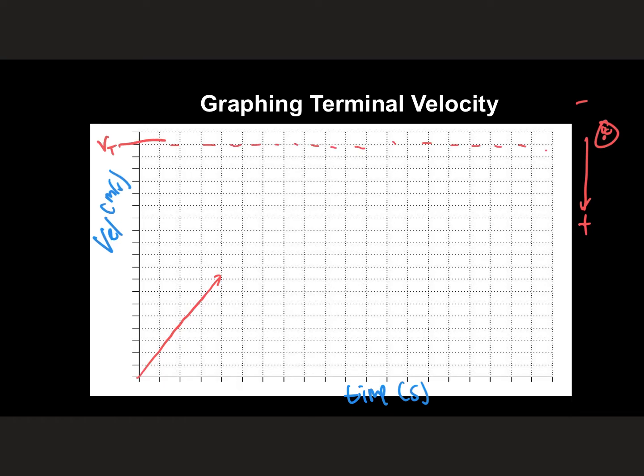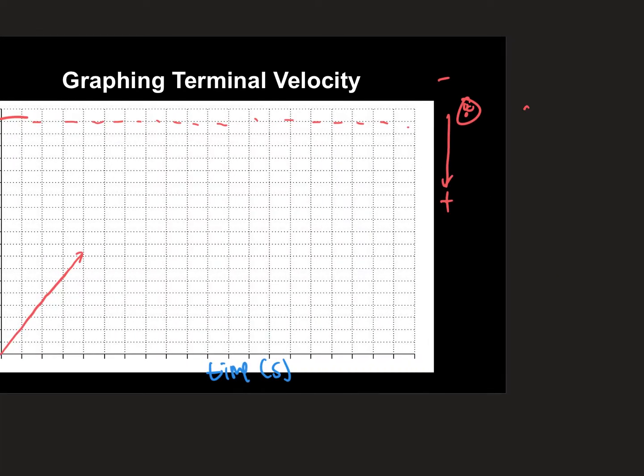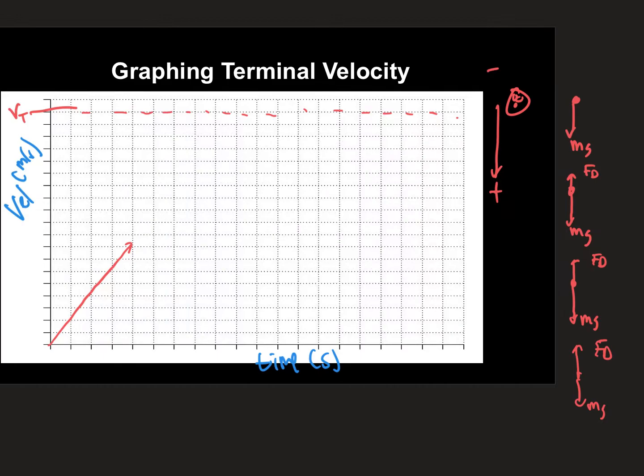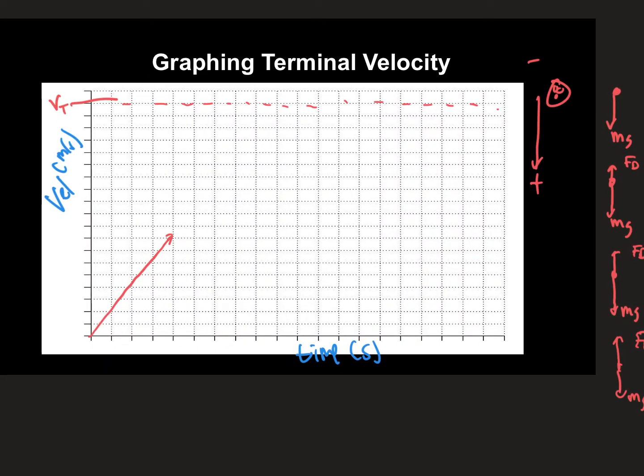So as the object starts to fall, it gets faster and faster, and that drag force slowly increases. So once you think about over time over here, let's think about over time. So here we just dropped it. You got mg. And as time progresses, that drag force gets a little bit bigger. So what's happening here is we're going to get a deceleration per se. So the object's going to start to decelerate up until the force of drag is equal to the object's mass times gravity.